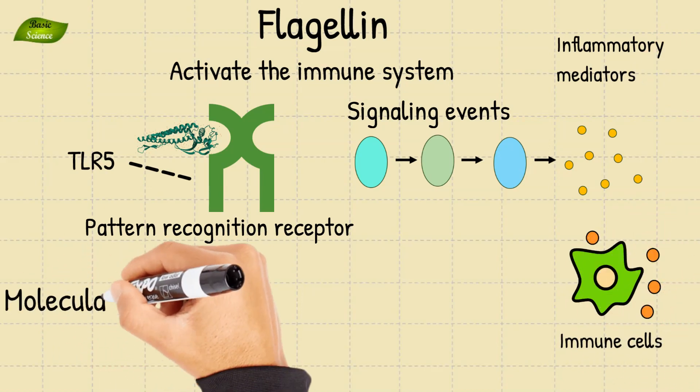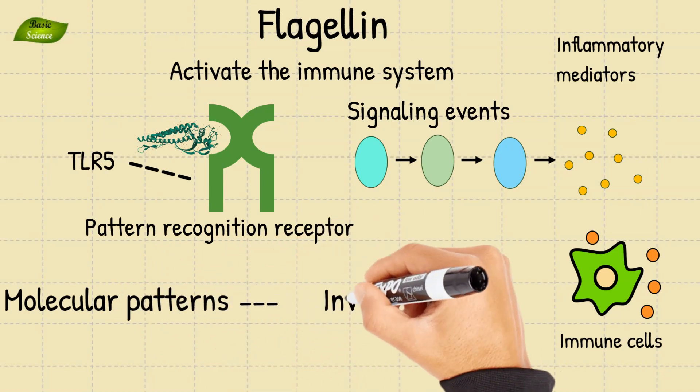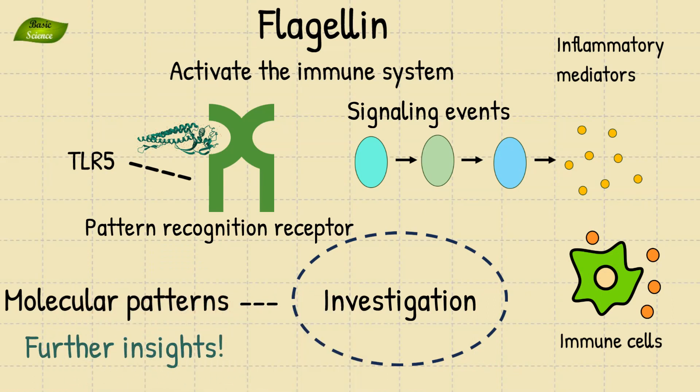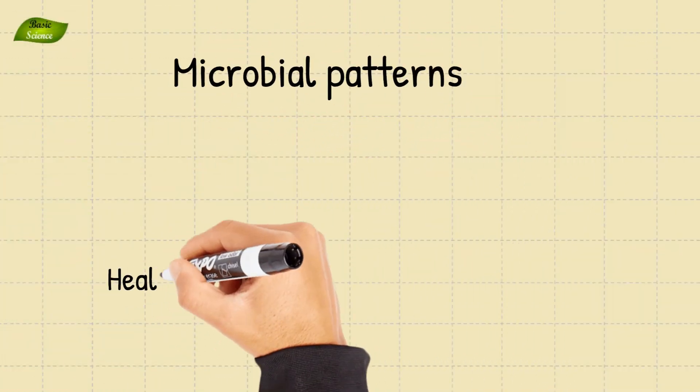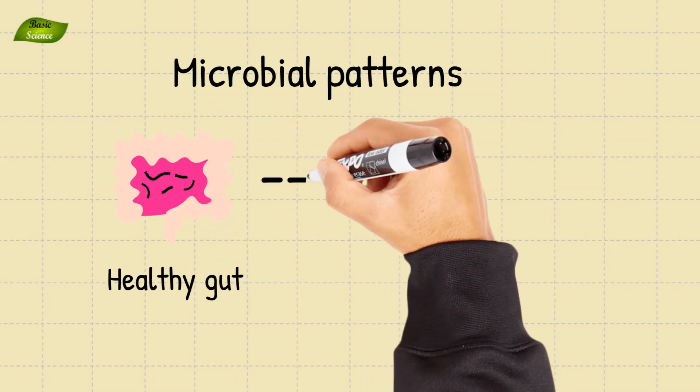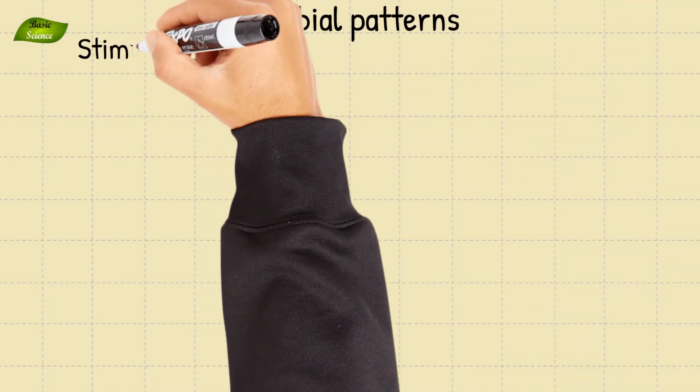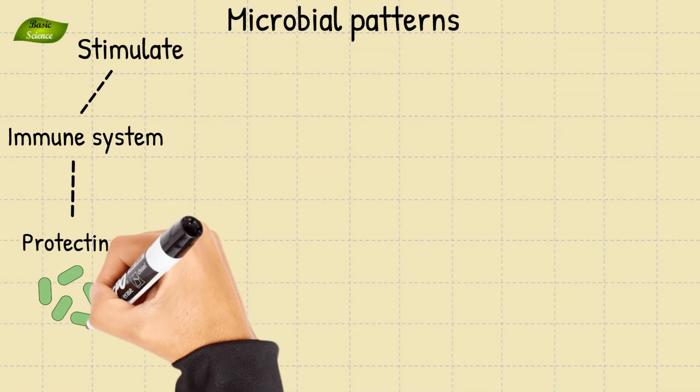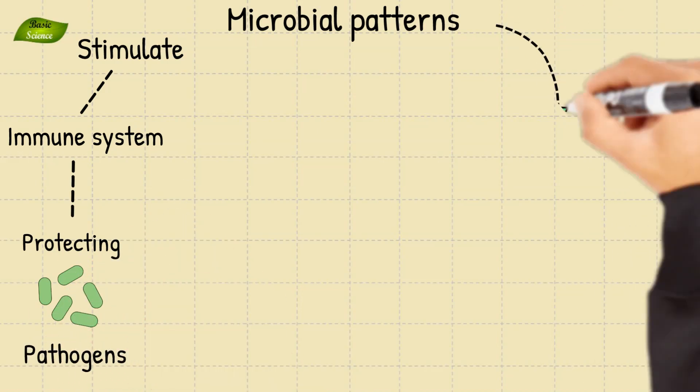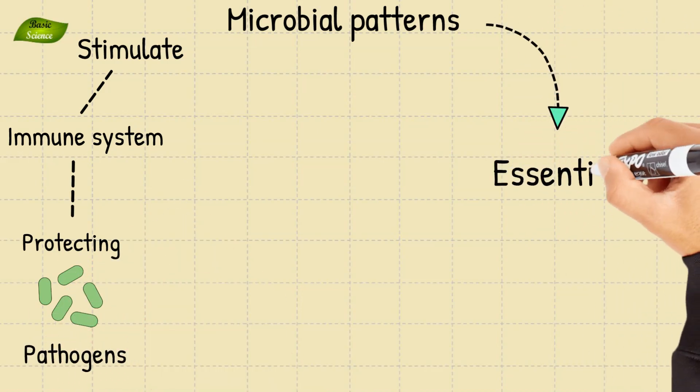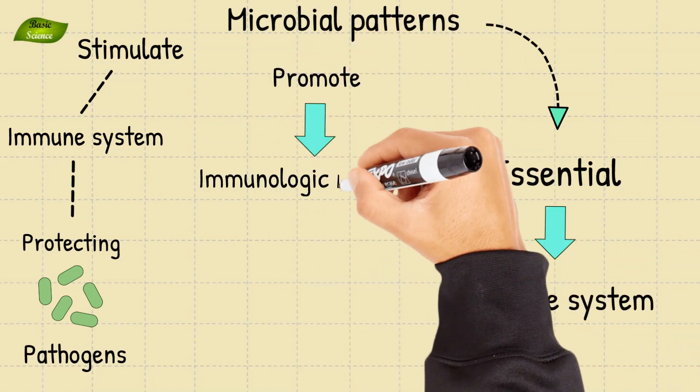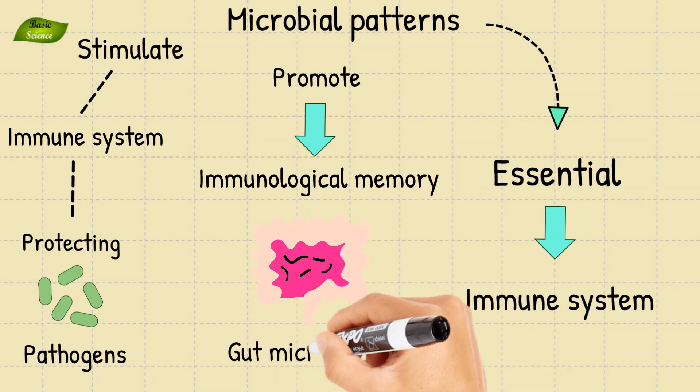Microbial patterns are important for maintaining a healthy gut microbiome in several different ways. Microbial patterns help to stimulate the immune system, which is essential for protecting the body from pathogens. They help promote immunological memory and maintain a balanced gut microbiome.